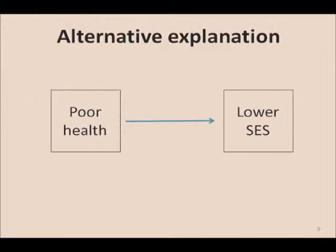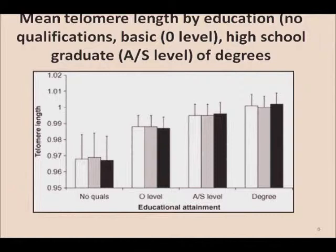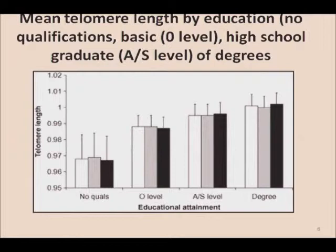Reverse causality is less likely for education, which is established early in life and clearly precedes the health problem. One study on telomere length related to educational advancement within the British system shows that even at the cellular level, greater educational attainment is related to a health indicator — longer telomere length. This holds even after adjustment for age, gender, occupation, income, and several biological risk factors. It would be hard to argue that your telomere length 20 years later somehow affected how much education you were going to get.